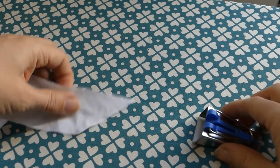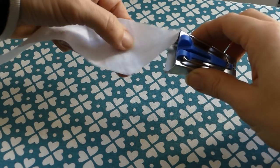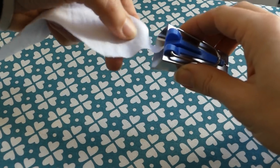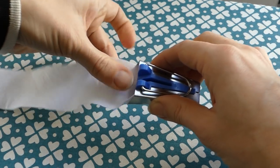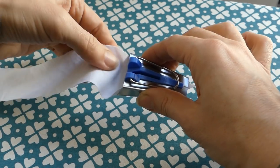Now take your bias tape maker. I use the biggest one in my set. A one inch wide bias tape maker actually makes half an inch wide double fold bias tape. Take the bias maker,